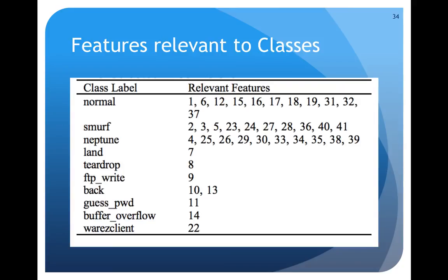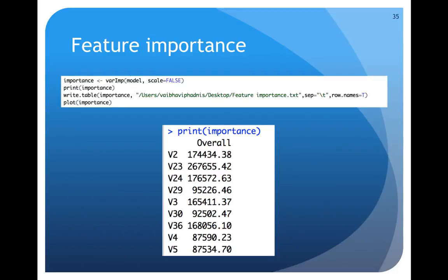Or we can use relevant features for particular types of attacks and use those to train our models to get better accuracy. For example, for normal type 1, 6, 12, 15 are other relevant features, so train your model with these features and you'll get better accuracy as far as classifying normal data is concerned.